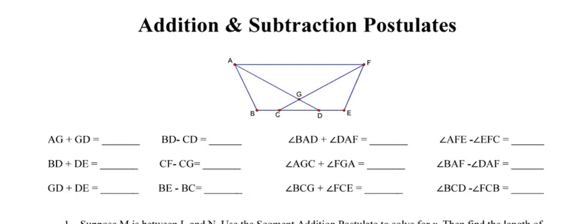They give us a picture and in the first problem we need to figure out what the distance between points A and G plus the distance between points G and D equals. The distance between A and G is represented by the purple line segment, and G to D by the green line segment. Because point G lies on the same straight line between points A and D, the sum of the two is represented by the distance between points A and D.